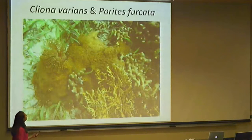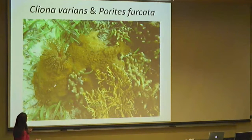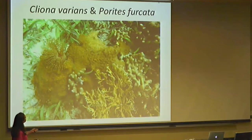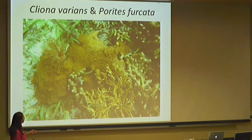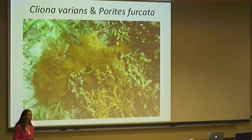This is the sponge and coral we're specifically working on. This is Cliona varians — it's a kind of lumpy mass; it's a sponge. This is Porites furcata, a fingertip coral with small branches. And this is actually a fire coral, which we tried to avoid because it's really painful if you come into contact with it.